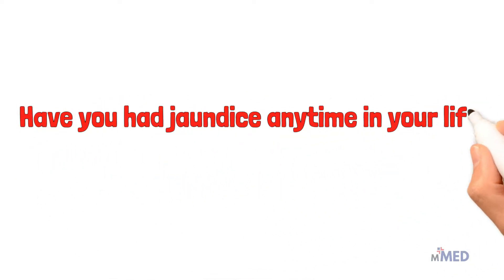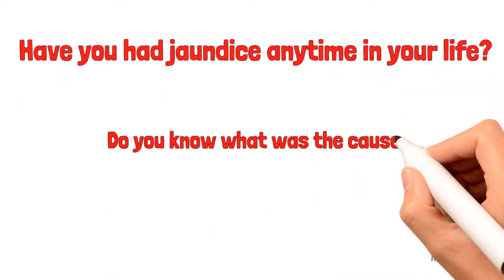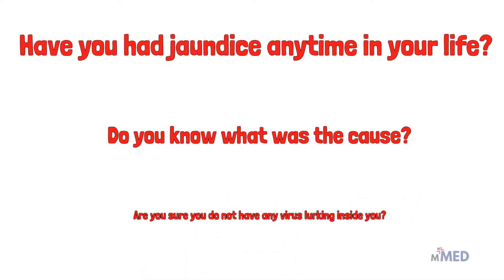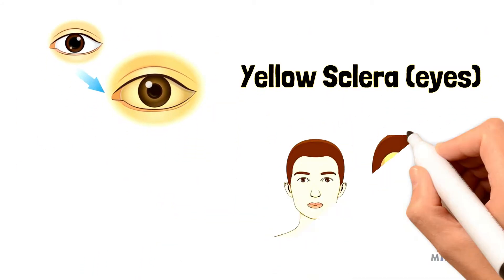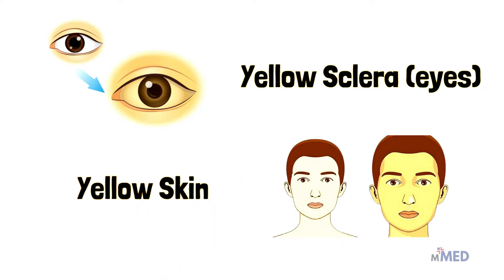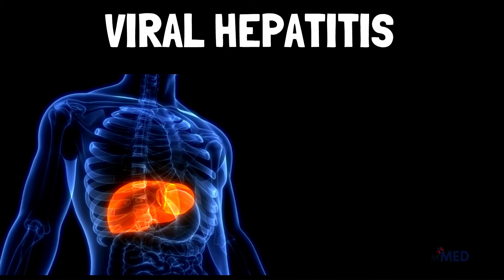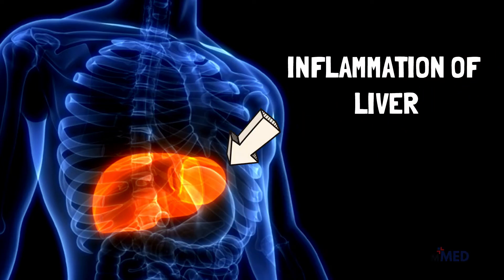Have you had jaundice any time in your life? Do you know what was the cause? Are you sure you do not have any virus lurking inside you? Jaundice is a condition in which the whites of your eyes and your skin turn yellow because of a high level of bilirubin. Viral Hepatitis is one of the main causes of jaundice. Viral Hepatitis is an infection that causes liver inflammation and damage.